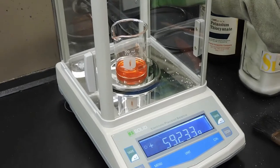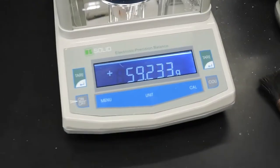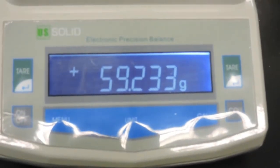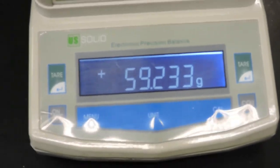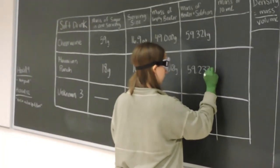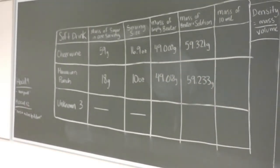And with the 10 milliliters in the beaker, we'll find its mass. And that is 59.233 grams for Hawaiian Punch.